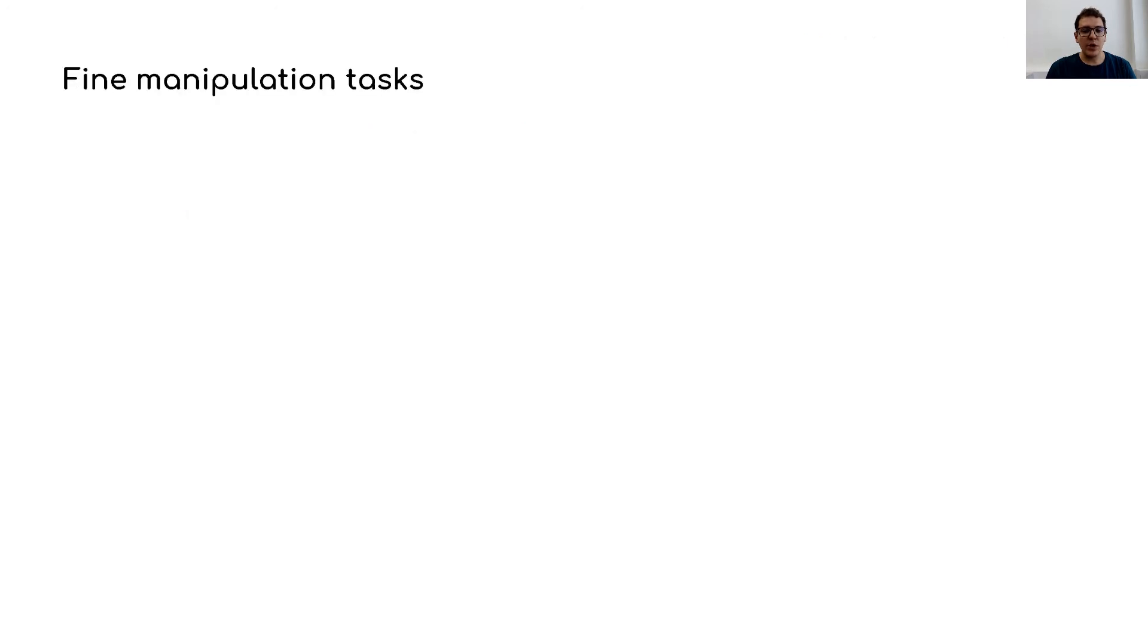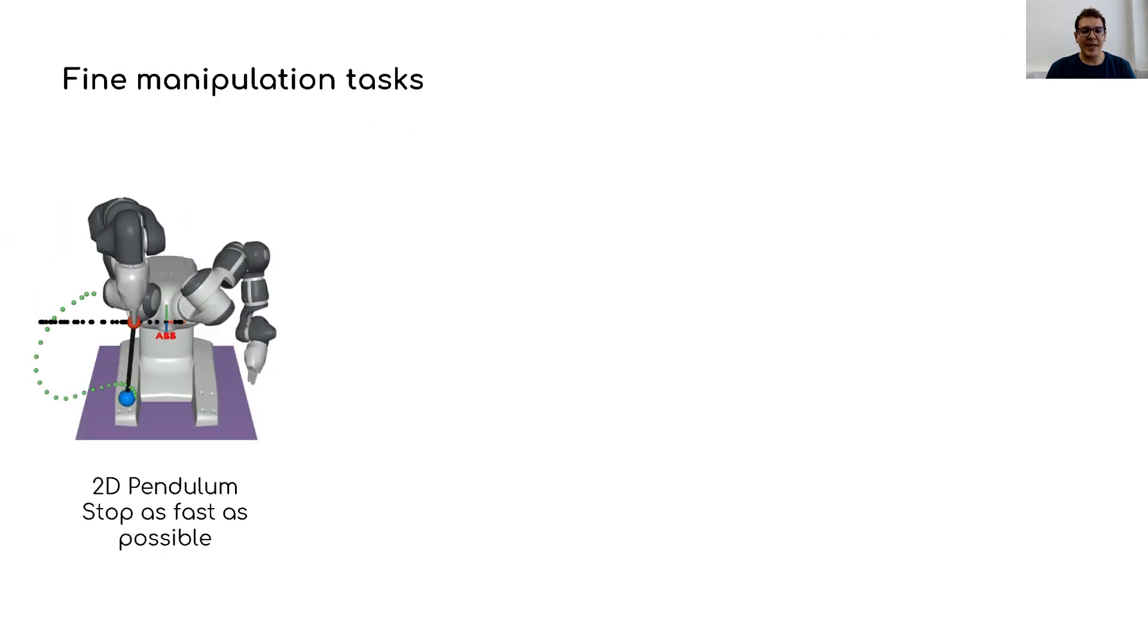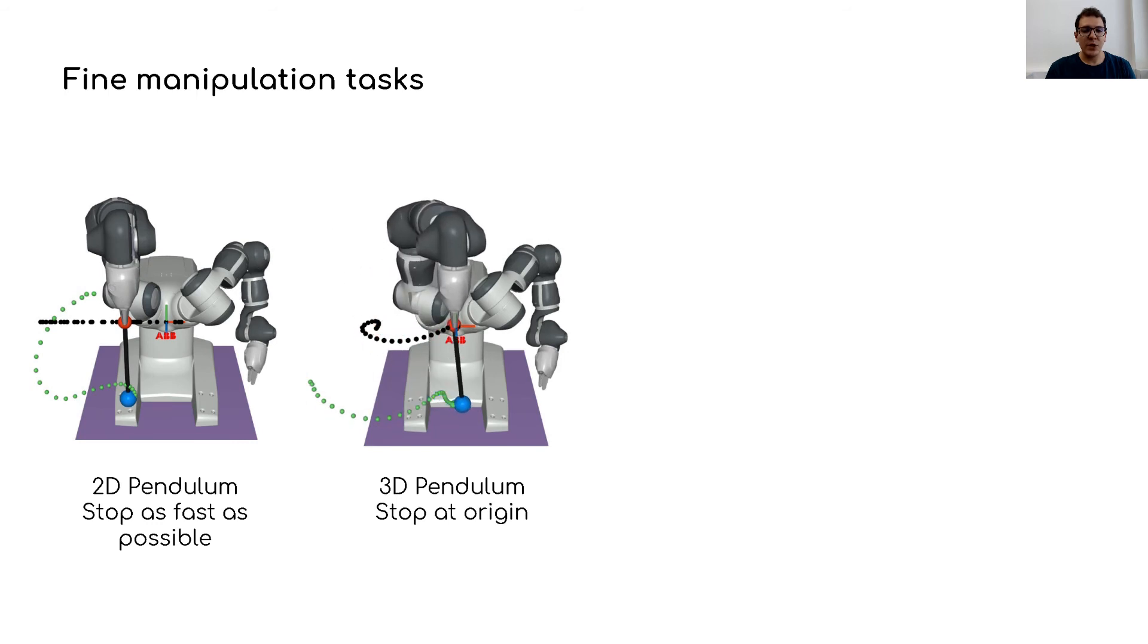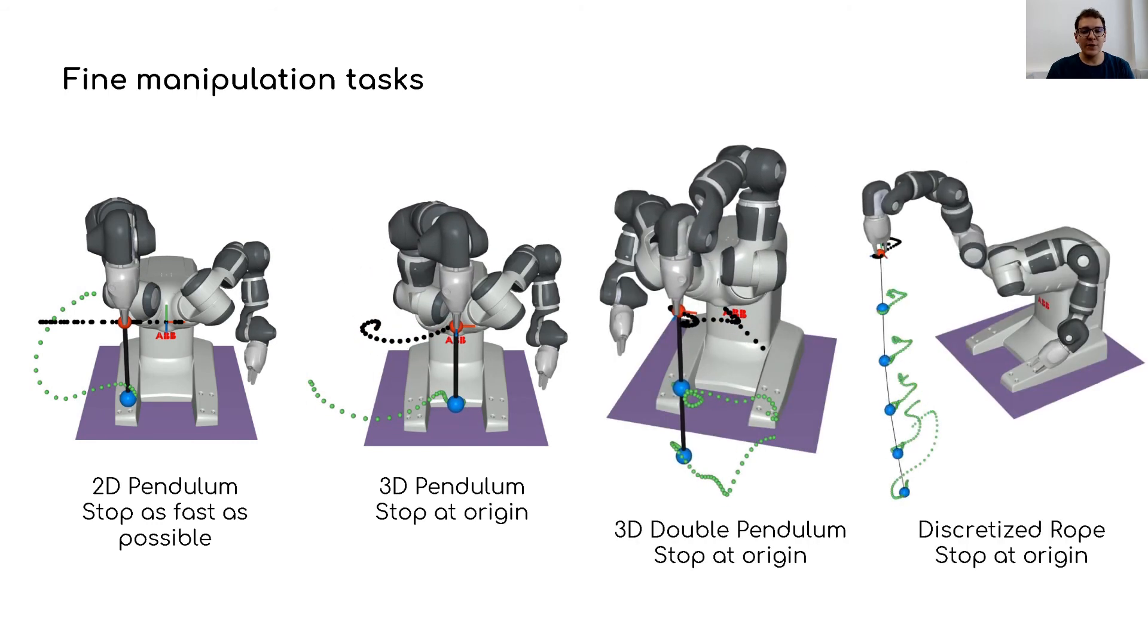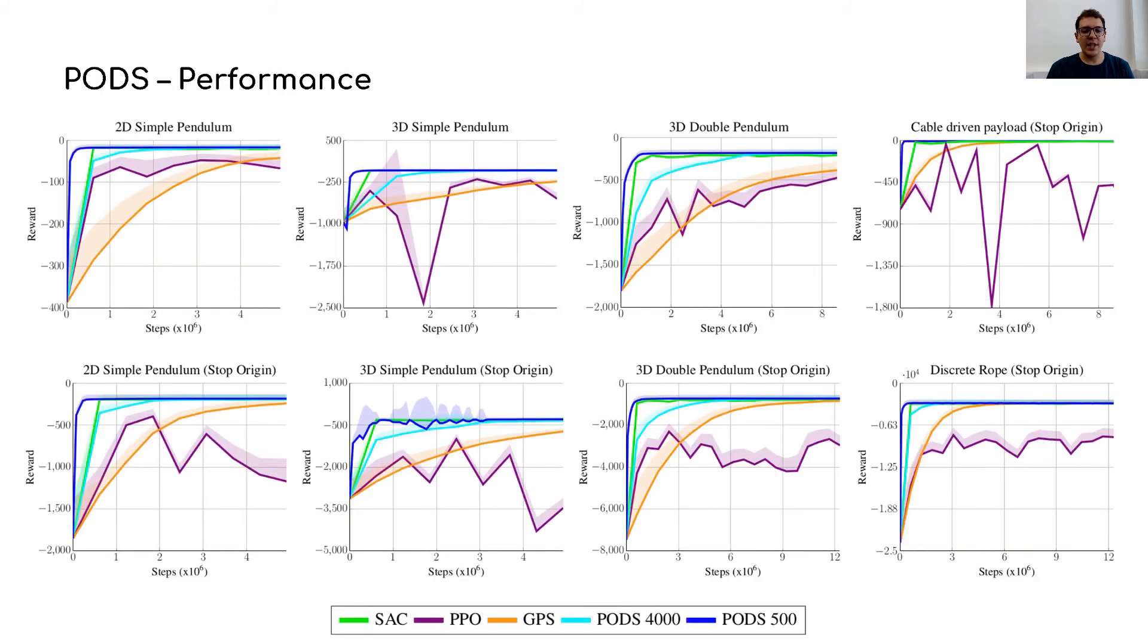To test our approach, we introduce a set of five manipulation tasks that require very precise actions, which in this case are handle velocities, and the goal of the task is to make a system of point masses stop as fast as possible or to make them stop at a specific location. We show that using the second-order update rule, PODS can outperform common RL baselines in terms of sample efficiency and final performance.